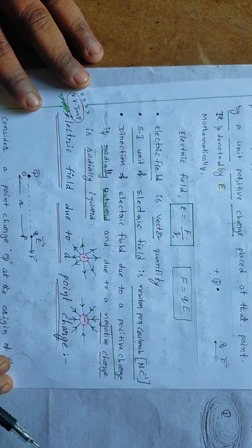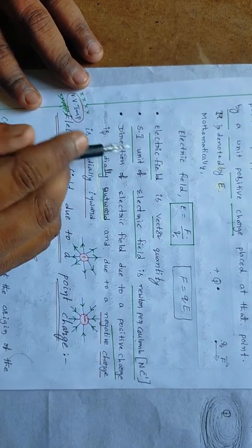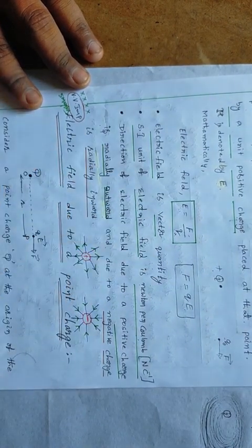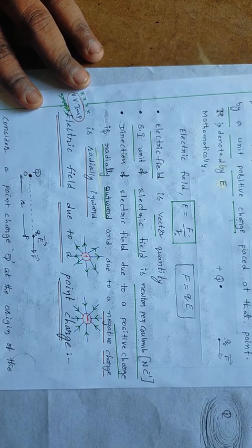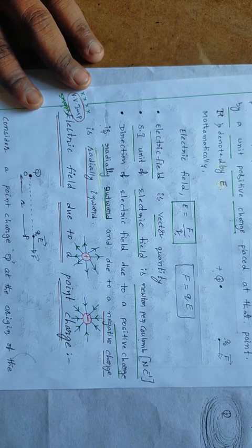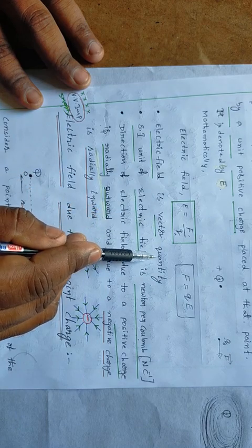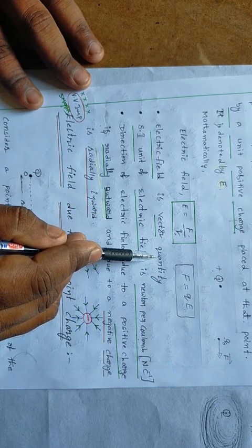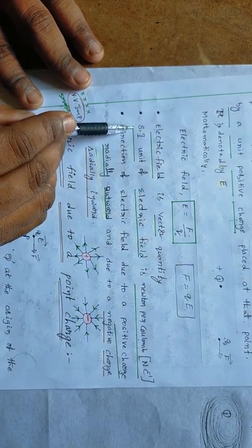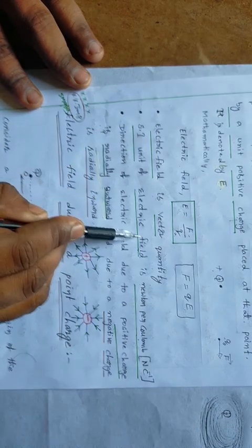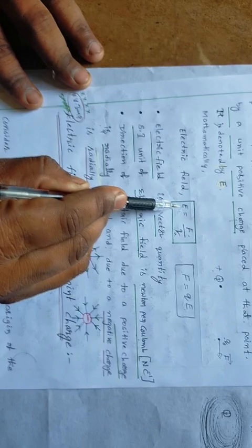Now, what type of physical quantity is electric field? Electric field is a vector quantity. Electric field has both magnitude as well as direction, and because of that we consider electric field as a vector quantity. The SI unit of electric field — the formula for electric field is E = F / q, so the SI unit is...